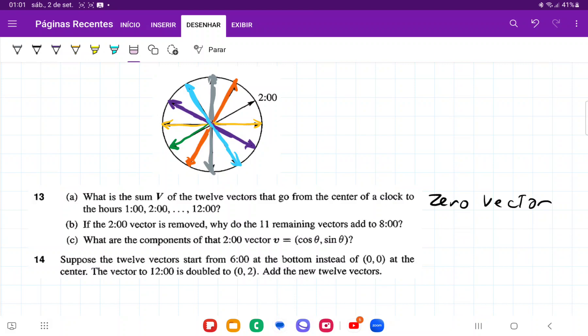And then it's asking us, what are the components of the two o'clock vector in terms of the cosine and the sine? So let me erase all this, that two o'clock vector, it's like we're having 90 degrees here, and then we're dividing into threes, right? So that two o'clock is actually, this is 30 degrees.